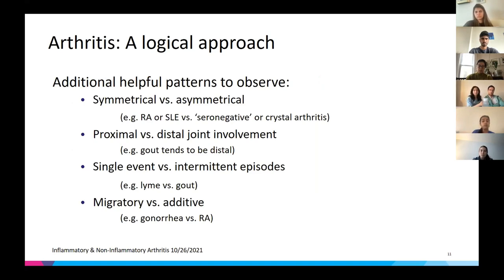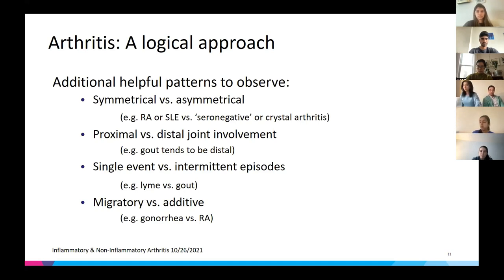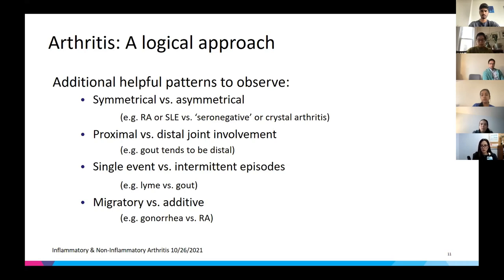More helpful patterns: look at whether the arthritis is symmetric versus asymmetric. RA and SLE tend to be symmetric — with RA you often get wrist, MCP, and PIP involvement on both sides. Seronegative or crystal arthritis tends to be asymmetric. Gout tends to be more distal, affecting the toes and MTP joints. Also consider if it's a single event like reactive arthritis or Lyme, versus intermittent episodes like gout, and if it's migratory — such as gonococcal arthritis — versus additive, like RA.